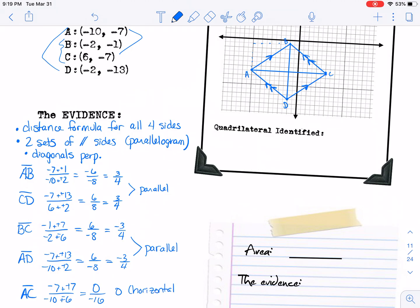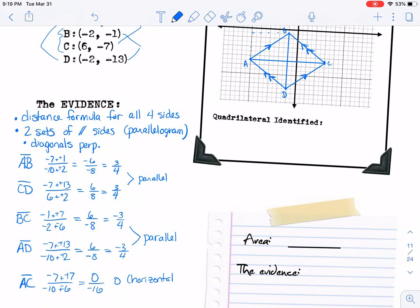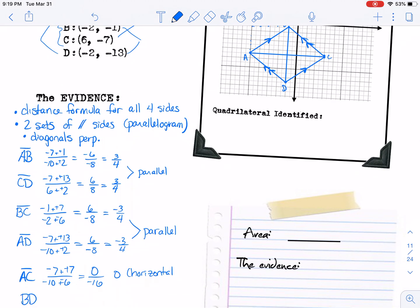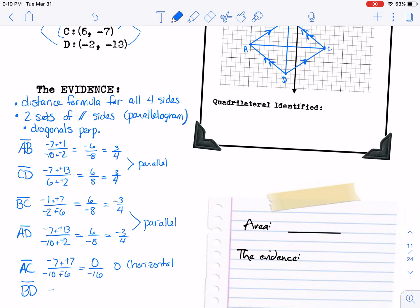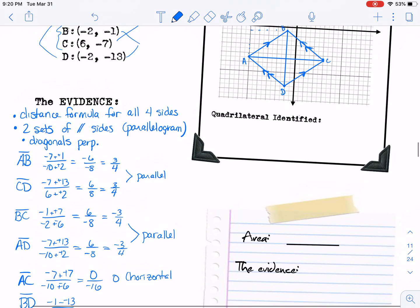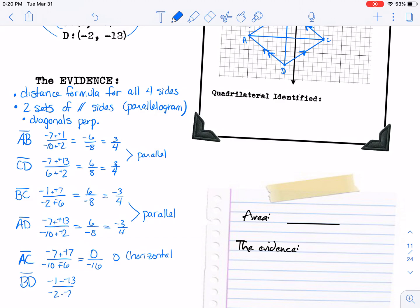And then we're going to need to do BD. And I'm out of room. I'll lose B if I slide up too far. BD is negative 1 minus negative 13 over negative 2 minus negative 2. And so for that, we get the 0 on the bottom, which is not allowed as far as the slope goes. So it's undefined, which means that it's vertical. That would give you a 12 on the top, not that it matters.